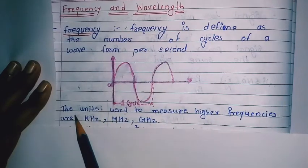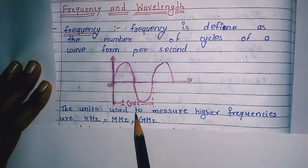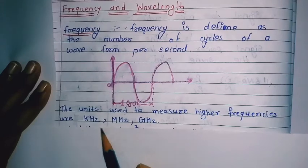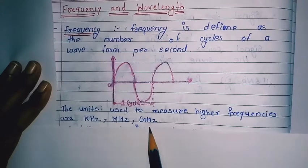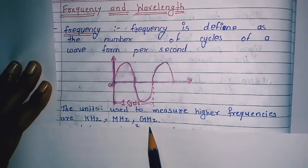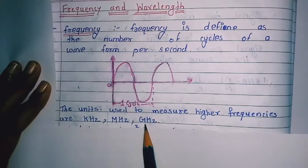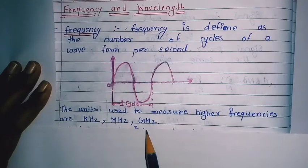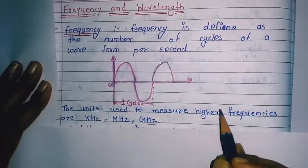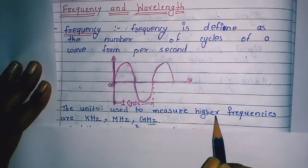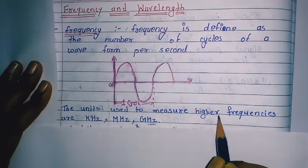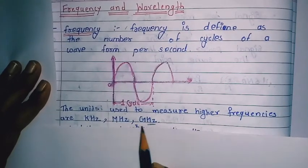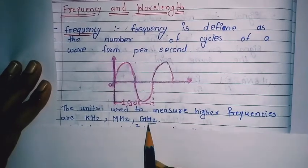The next point: the units used to measure high frequencies are kilohertz, megahertz and gigahertz. The normal unit of frequency is the hertz, but if you measure higher frequency, then it will be in kilohertz, megahertz or gigahertz.